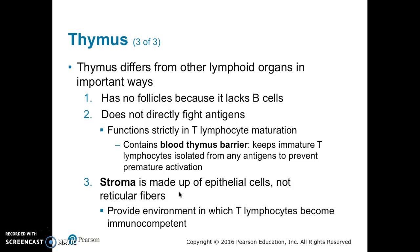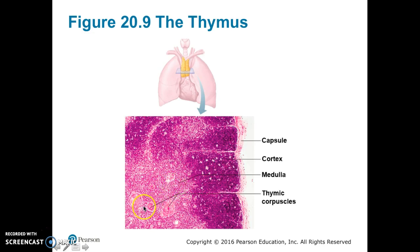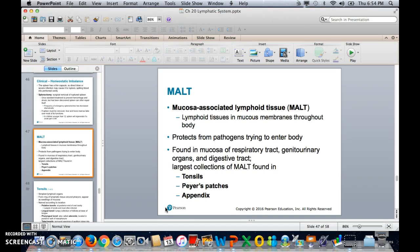Figure 20.9 shows a slide of the thymus with the capsule shown here, the cortex, and the inner medulla. The inner medulla contains thymic corpuscles. That concludes the end of our lymphatic system lecture.